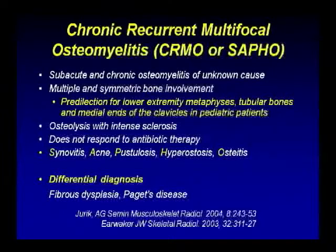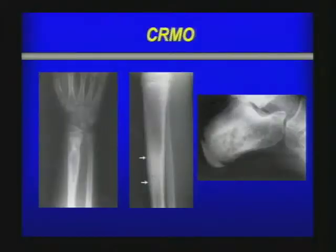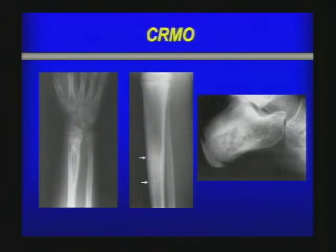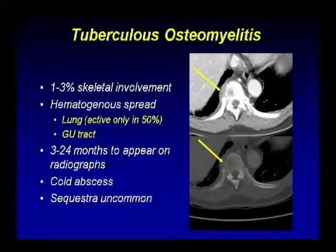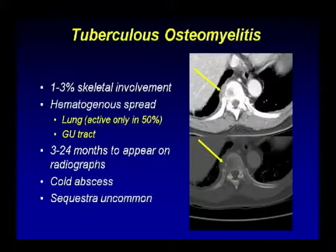CRMO is also typically found at the medial ends of the clavicles. Differential diagnosis for CRMO includes fibrous dysplasia and Paget's disease. An example shows very sclerotic areas with lytic changes in the distal radius, tibia, and calcaneus. Tuberculosis involves the skeletal system in one to three percent of cases, usually from hematogenous spread from the lung or genitourinary tract, and takes a very long time before changes are visible on radiographs.